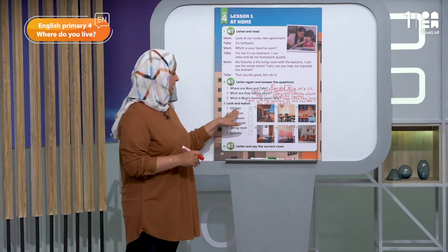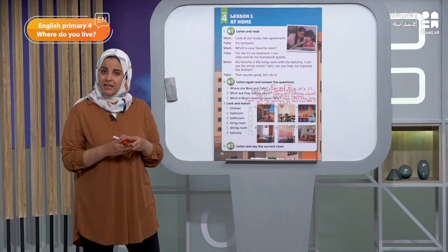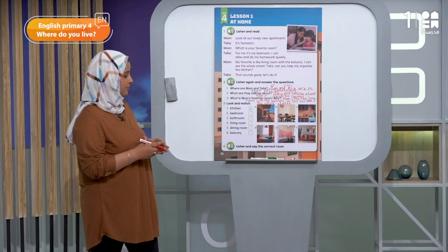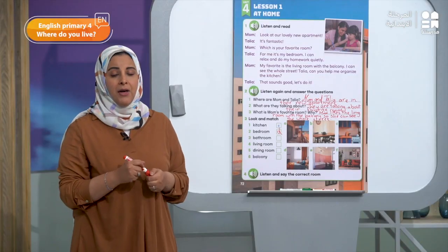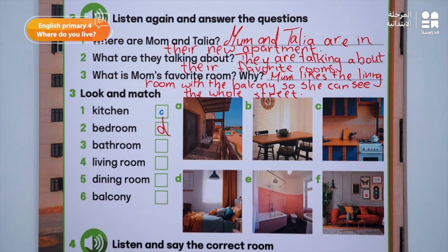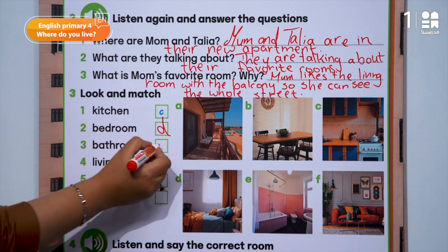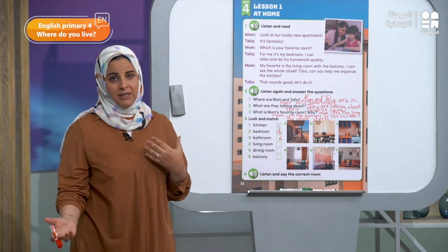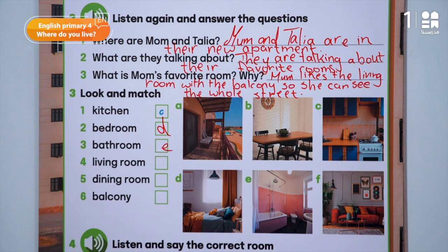Number one is kitchen — which picture? Very good, picture C is the kitchen. Number two, bedroom — which picture? The room that has a bed, of course room D. Number three, bathroom — which one is the bathroom? قلنا bathroom الحمام — very good, so number three will be E. Number four, the living room — القوضة اللي ممكن بنوع نلعب فيها مع أخوتنا ونتفرج على television. It has a couch — very good, F.